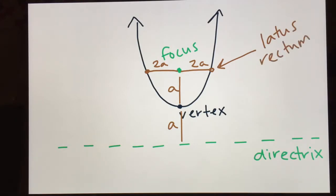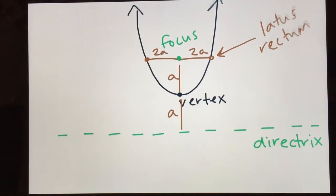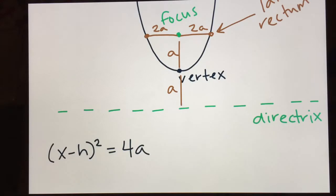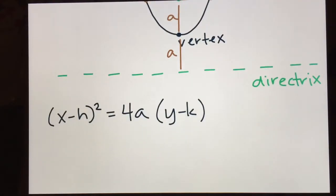For this picture, the equation we're going to be looking at is (x − h)² = 4a(y − k), where a is the distance between the vertex and the focus, or the vertex and the directrix. This specifically is the formula if the parabola opens up, and the vertex for this picture is going to be (h, k).